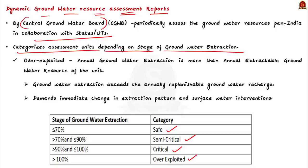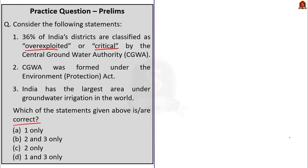An area can belong to one of four categories: over-exploited, critical, semi-critical, or safe. Over-exploited means stage of groundwater extraction is greater than 100%; critical means greater than 90% but less than 100%. Based on the 2017 national compilation, 1,186 assessed units (17%) were over-exploited and 313 units (about 5%) were critical — totalling 22%. The first statement claiming 36% is therefore wrong.